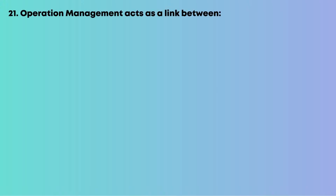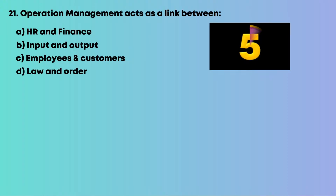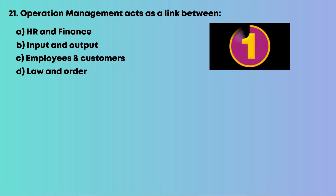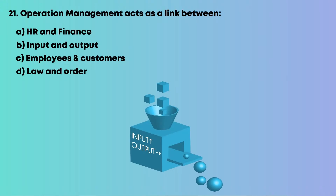Question 21: Operations management acts as a link between: A, HR and finance; B, input and output; C, employees and customers; D, law and order. It transforms inputs into valuable outputs. So the answer is B, input and output.